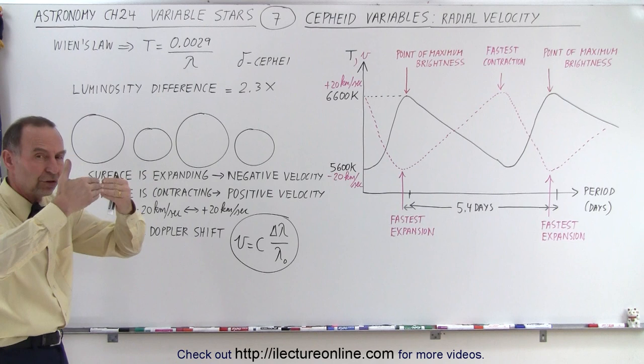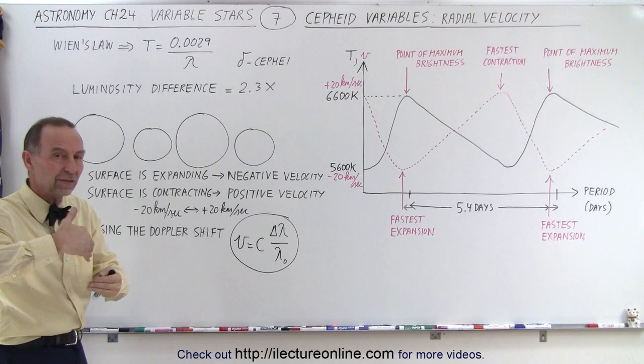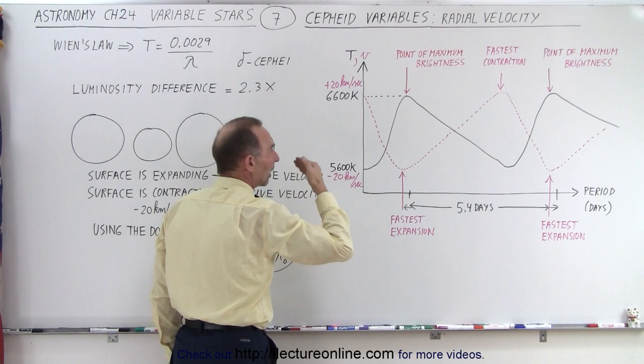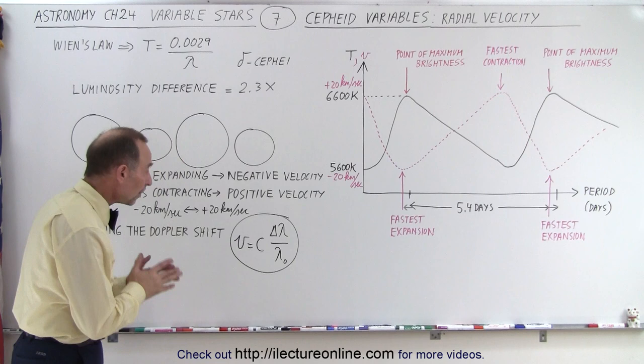As the star is expanding, the surface is moving towards us, we consider that negative velocity, and when the star is contracting, the surface is moving away from us, we consider that positive velocity. And so we measure that the velocity changes from 20 kilometers per second of the surface moving towards us, and 20 kilometers per second as the surface moving away from us, and notice that's over a period of 5.4 days.